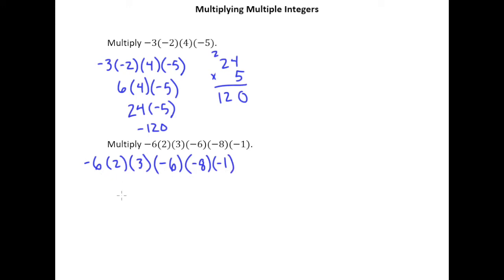So I have negative 6 times 2 is, of course, negative 12. Rewrite everything else. And next, let's take negative 12 times 3. I'm just working from left to right.